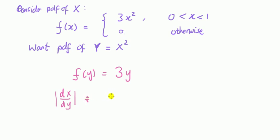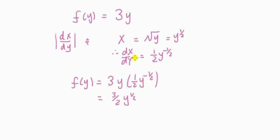Now, in this case, if we rearrange this thing, x would be equal to square root of y, y to the power of half. Therefore, dx by dy is equal to a half y to the minus a half. And then we multiply this thing into there. 3y, multiply it by the derivative dx by dy, the absolute value. And there you go.